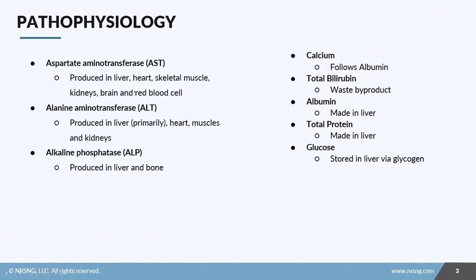The column on the left contains enzymes specific to liver function that we monitor. The column on the right contains things affected by liver disease. Looking at AST, ALT, and ALP, you can see they're all produced in more than one place other than the liver. This means if you have an elevation in any one of these enzymes and not the others, you should suspect something other than the liver.